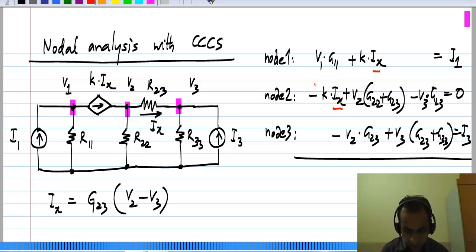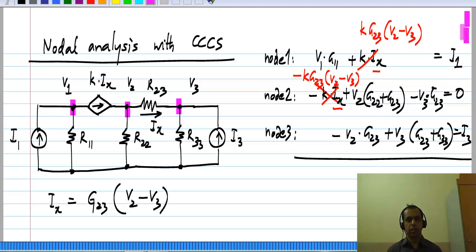In both of these I will replace this with minus k G_23 (V_2 - V_3). I will have three equations in three unknowns, the node voltages, and I can solve these to get the node voltages and after that everything else in the circuit.